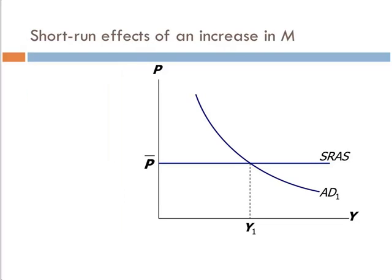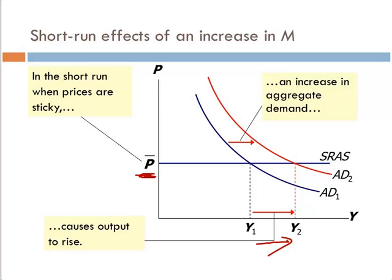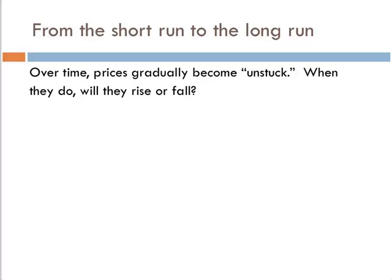When we have aggregate demand, it intersects the short run aggregate supply curve. In the short run, we have a fixed price level, and aggregate demand allows us to determine output. If we have an increase in aggregate demand, price level stays the same — because prices are sticky and this is the short run — but output increases. Over time, prices gradually become unstuck, and the economy is able to react. Prices then either rise or fall in order to come back to that natural level of output, or the long run aggregate supply curve.